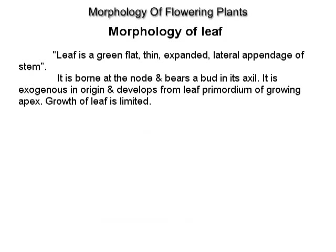Morphology of a leaf. A leaf is a green, flat, thin, expanded, lateral appendage of the stem. It is borne at the node and bears a bud in its axil. It is exogenous in origin and develops from the leaf primordium of the growing apex. Growth of the leaf is limited.